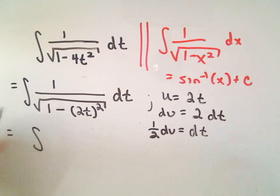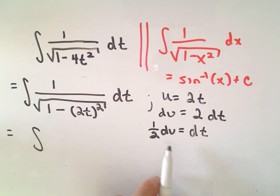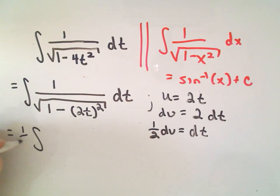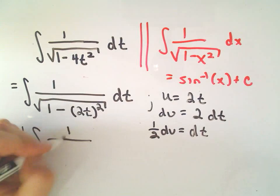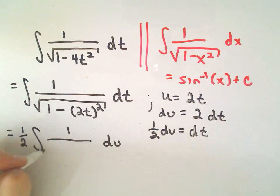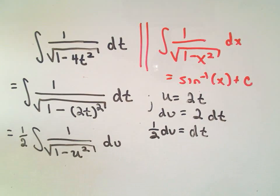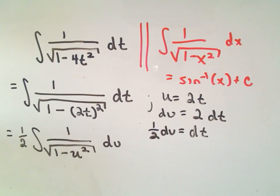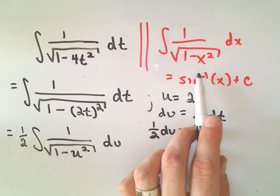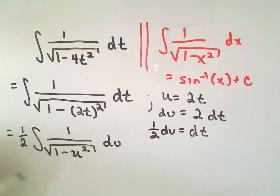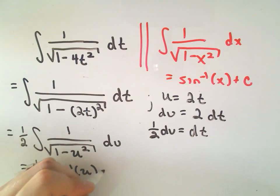So, now if we just simply rewrite everything, the dt again, I'll replace that with the 1 half du. And, now underneath the square root, we simply have 1 minus u squared. And, now we've made our integral through a u substitution look just like the formula.